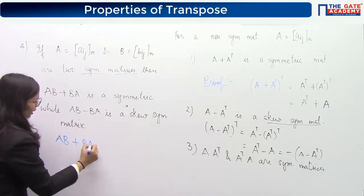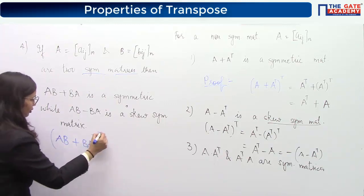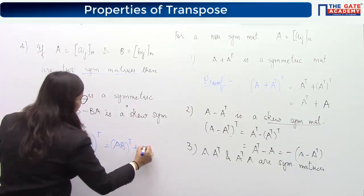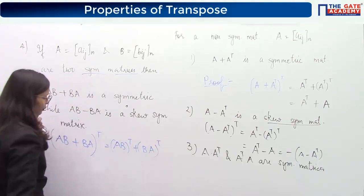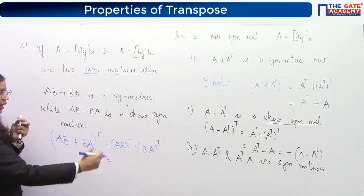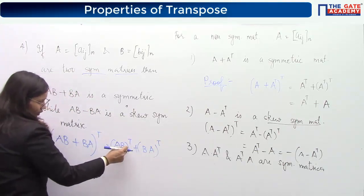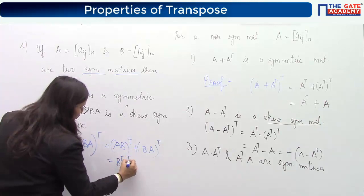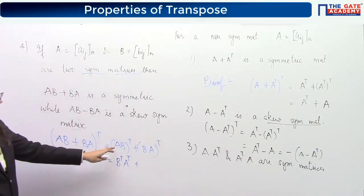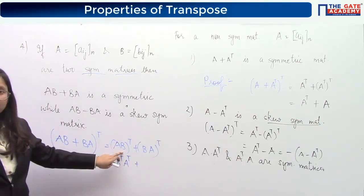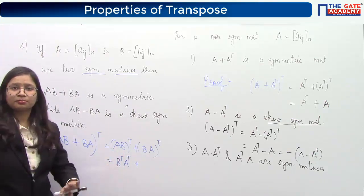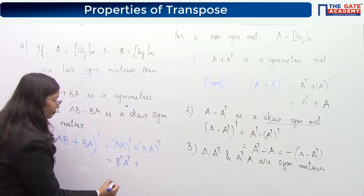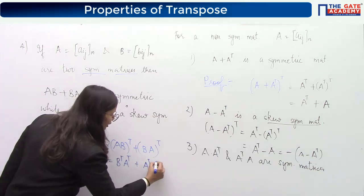The transpose of AB plus BA equals AB transpose plus BA transpose. There is a property of transpose that the transpose of a product of two matrices requires interchanging the order: AB transpose equals B transpose A transpose. If AB is defined, then A transpose B transpose may not be defined unless you interchange the order — that is why the order must be interchanged.